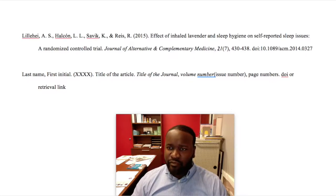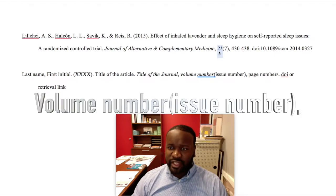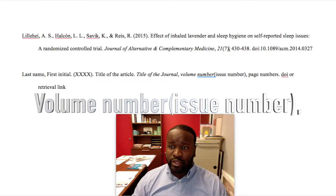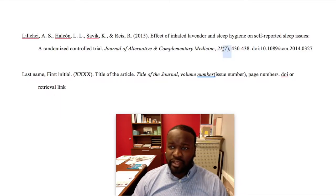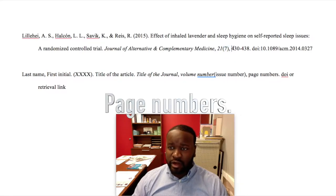After that, we still have italics on and we italicize our volume number. We then turn italics off and put the issue number in parentheses, followed by a comma, and then our page number.